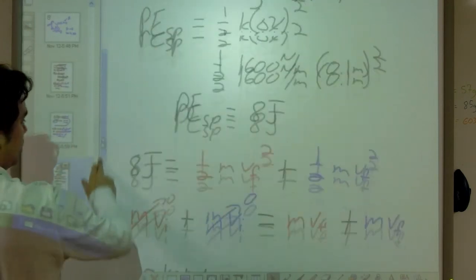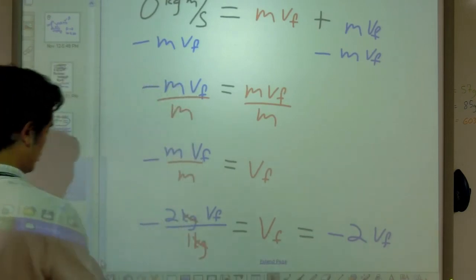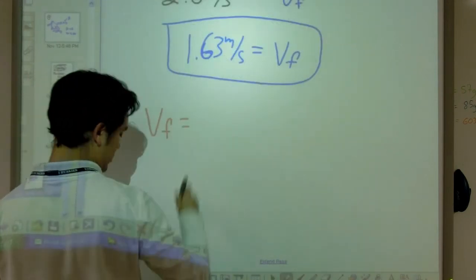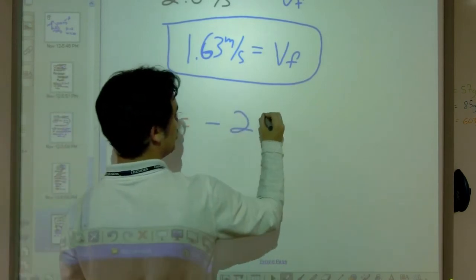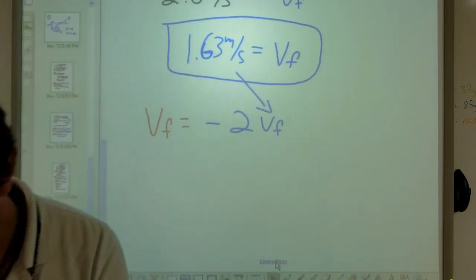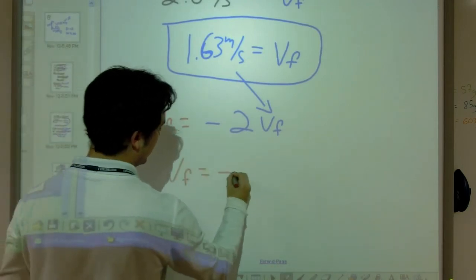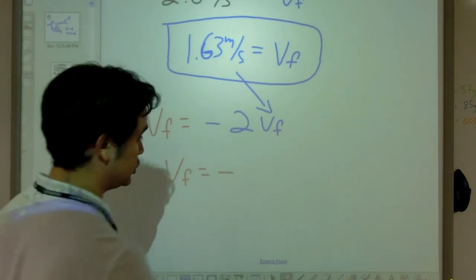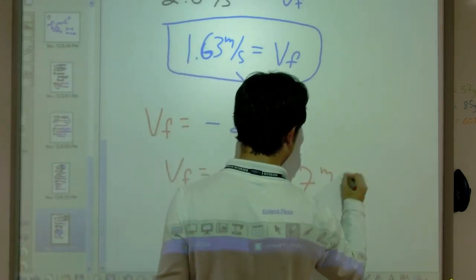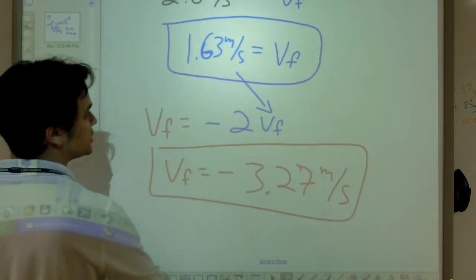And if we jump back up and grab one of our simple equations, we know that the red block is equal to negative 2 times that. And so, taking that equation, V final equals negative 2 V final of the blue. I'm going to plug this value in there. And I find that the red block is moving with a velocity of negative, which means it's moving to the left, which is good. 3.27 meters per second. I now know how fast both of the blocks are going.